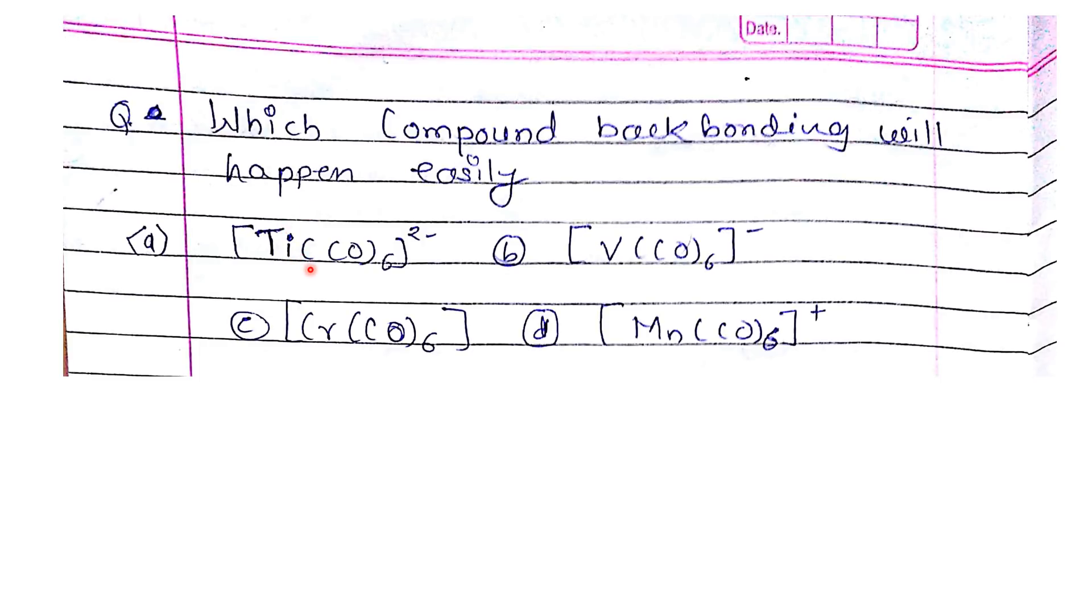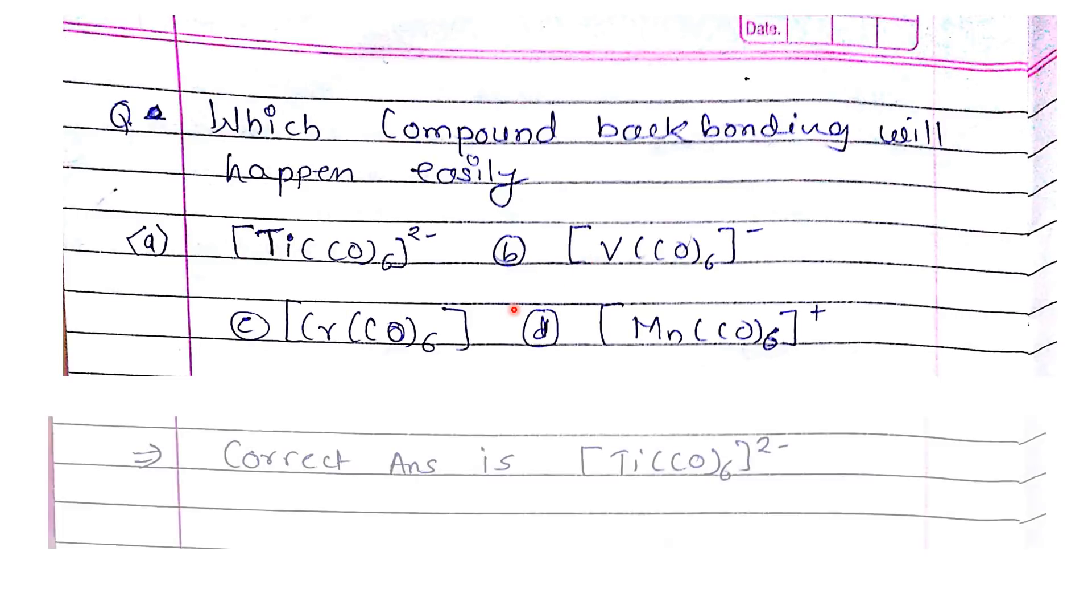In this case, which metal has more negative charge will easily undergo backbonding, and the metal-carbon bond will be stronger and the CO bond will be weaker. Out of these, the correct option is hexacarbonyl titanium two minus. Hope you write it correctly.